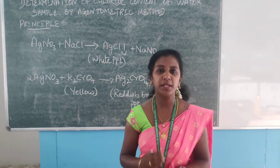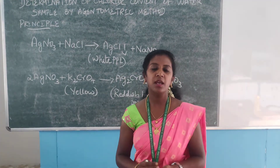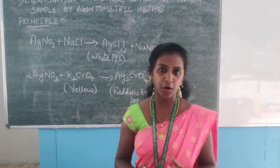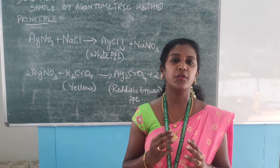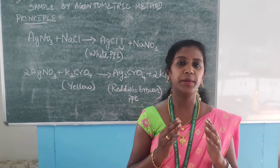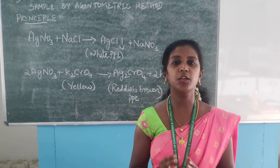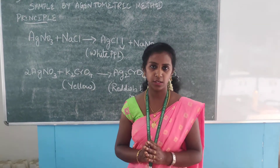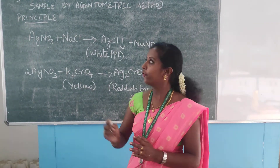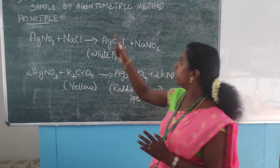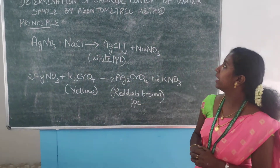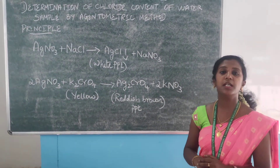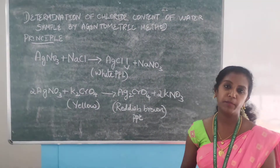This is one of the very simplest experiments which can be done in our laboratory to find out the percentage of chloride ions present in the water sample. For that, we are going to determine chloride ions using the argentometric method.